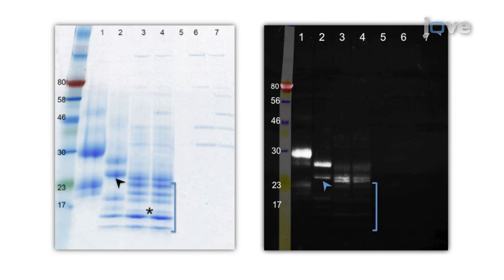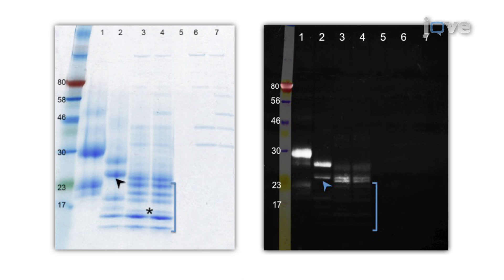Next, SDS-PAGE followed by Coomassie Blue staining and a sugar-specific staining method, ProQ Emerald 300, are used in order to analyze the deglycosylated HCG beta sample.